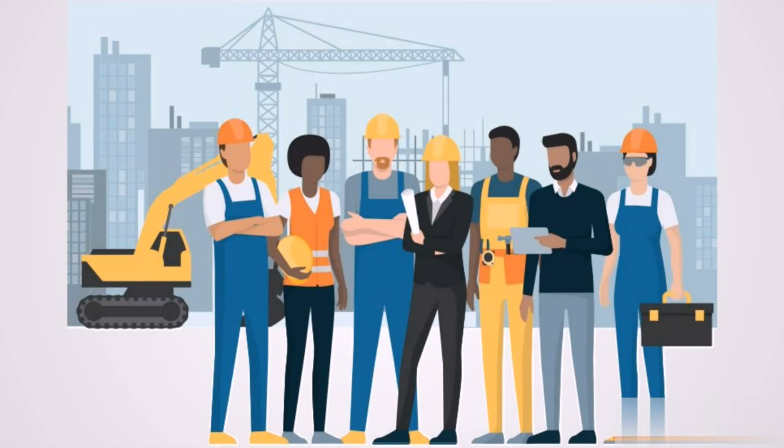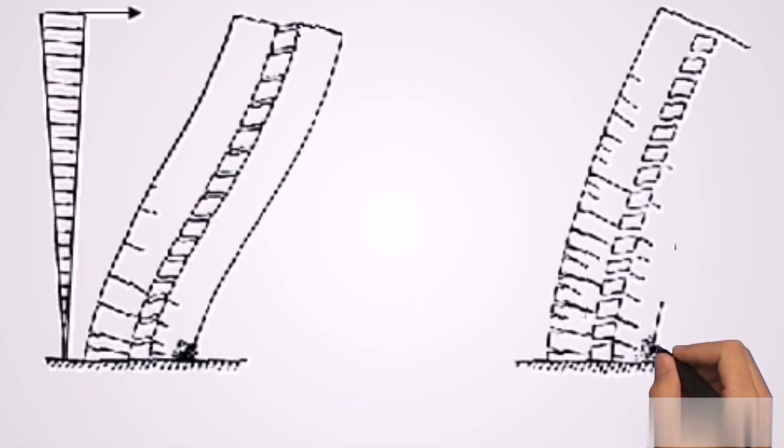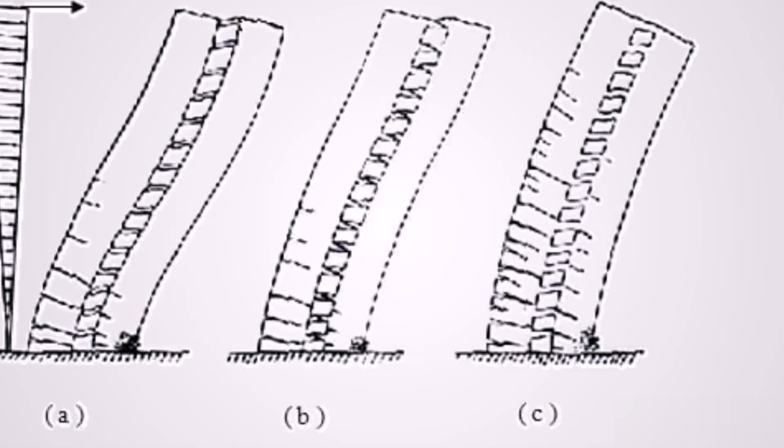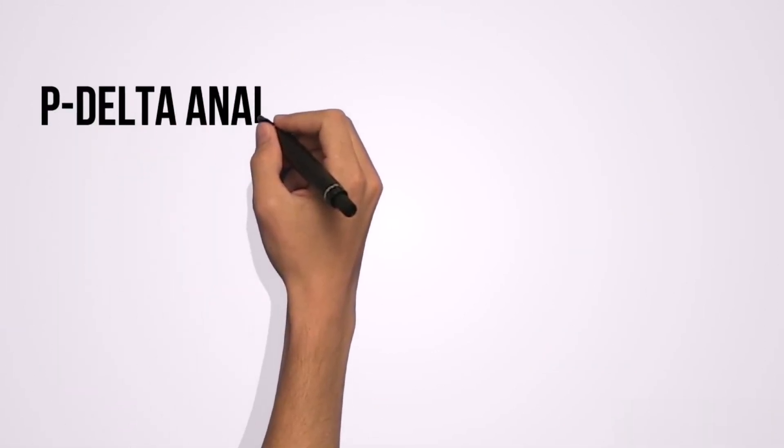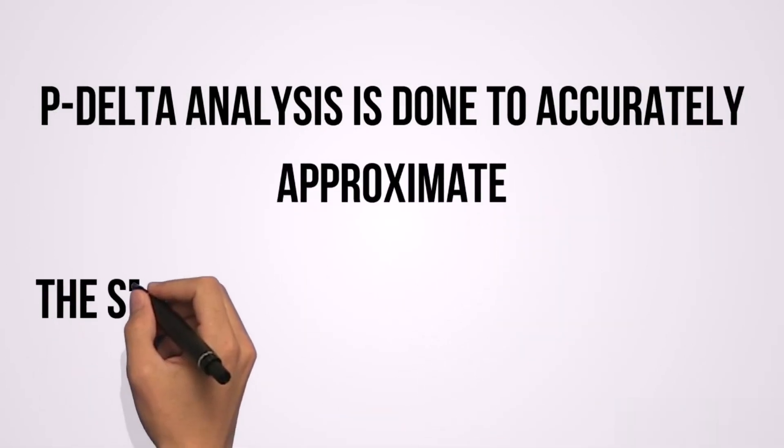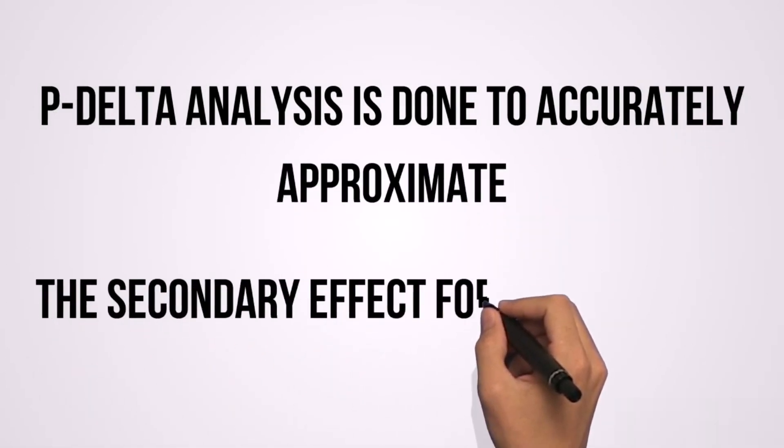But P-delta analysis is really great to check if your structure is not undergoing large deformation after you have done other analysis. In a nutshell, P-delta analysis is done to accurately approximate the secondary effects for the members.